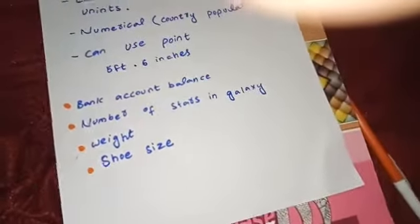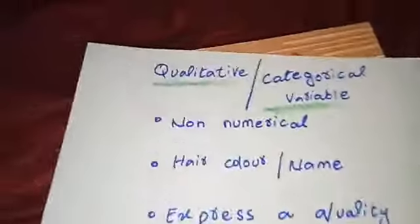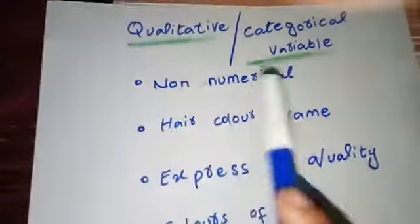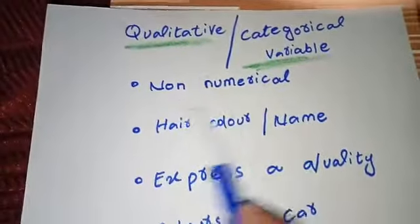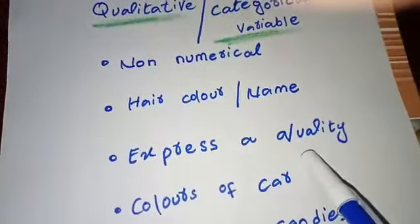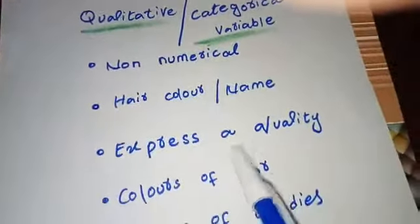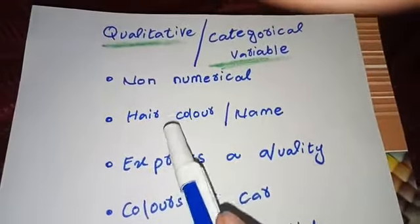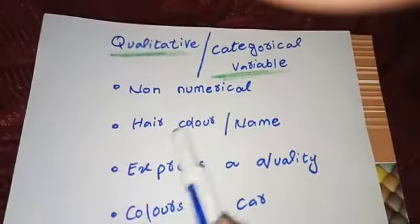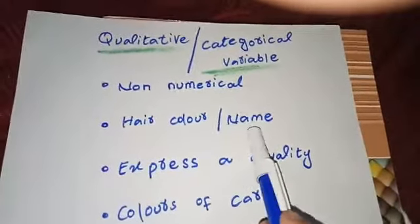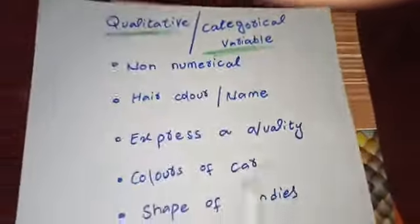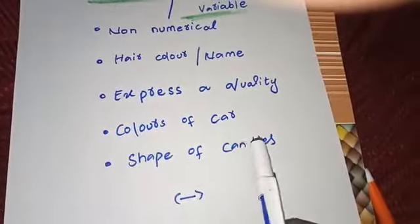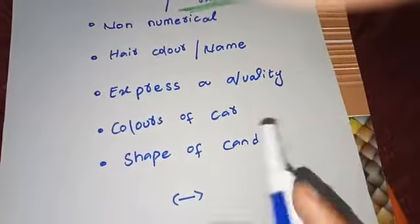Qualitative variables are also called categorical variables. They are always non-numerical and express a quality — that is the main point. For example, hair color: some people have black hair and some have brownish hair. Other examples include your name, the colors of cars in a parking lot, and the shapes of candies — some candies are circular and some have different shapes.